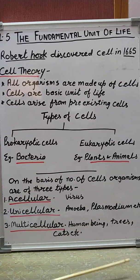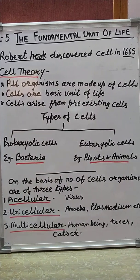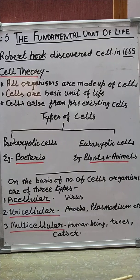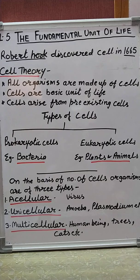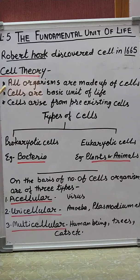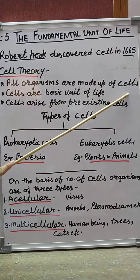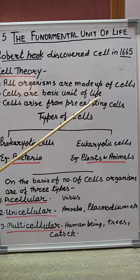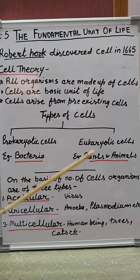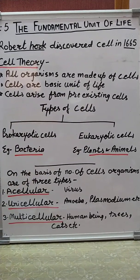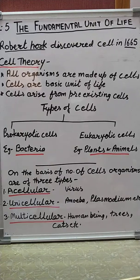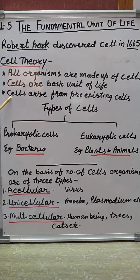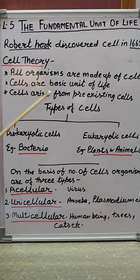Cell theory was given by two scientists: Matthias Schleiden and Theodore Schwann. They stated that all organisms are made up of cells, and cells are the basic unit of life.